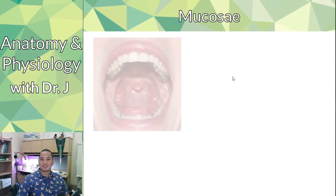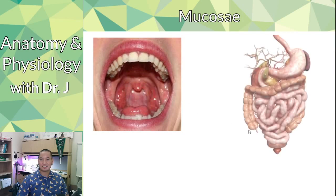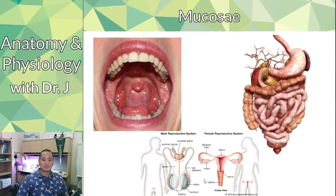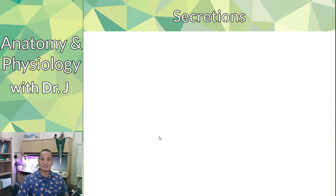Mucosae are linings found in our oral cavity, our gut, and our reproductive system — all areas exposed to the environment. Things like pathogens can enter through your mouth, your gut, and openings of the reproductive system. Mucosae produce secretions, which are chemicals and molecules your body produces naturally to defend itself and maintain these linings.